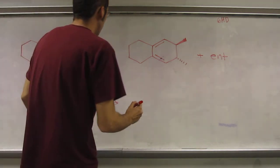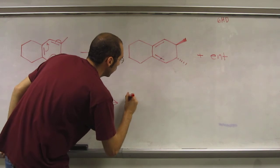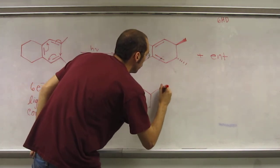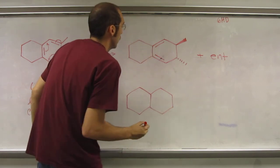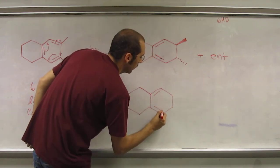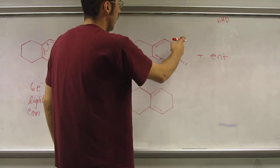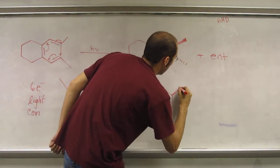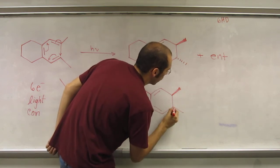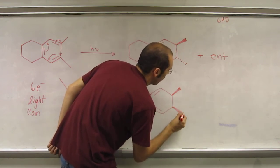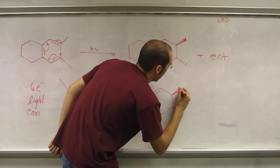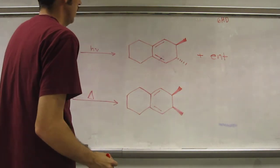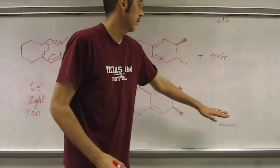So if we do this, we'll make the same skeletal frame, but we'll make the meso compound here. So this is meso, so there's no enantiomer.